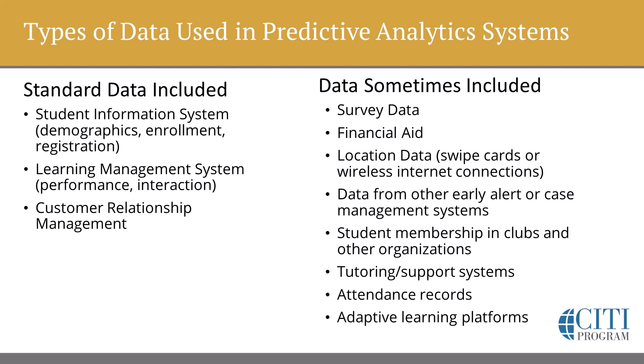Some predictive analytics data systems actually use additional data. Some of them use survey data, as we heard from Mount St. Mary's. Others use financial aid data, which can be a little complicated given the rules around that with the U.S. Department of Education. Some use location data like swipe cards or wireless internet connections. Others use data from early alert systems or case management systems. There's also the use of student membership in clubs or other organizations, the use of tutoring supports, attendance records, and adaptive learning platforms.